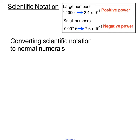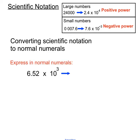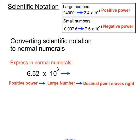We're also asked to convert scientific notation expressions back into normal numerals. If we're asked to express 6.52 times 10 to the 3 in normal digits, we focus on the fact that it is a positive power. So we'll be expecting a large number to be created, and to create a larger number than 6.52 we'll move the decimal point to the right.